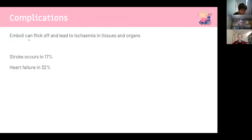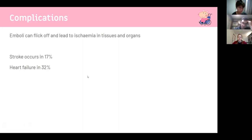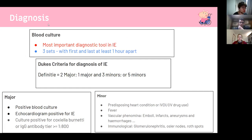Complications include stroke and heart failure. Clots interfering with perfusion of the coronary arteries cause myocardial infarction. Stroke occurs when clots reduce blood supply to the brain. Heart failure occurs when the heart is pumping hard but not effectively. Blood culture is the most important diagnostic tool in infective endocarditis — typically three tests are taken, with the first and last at least one hour apart.